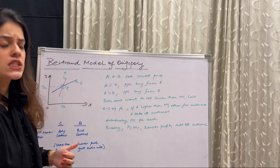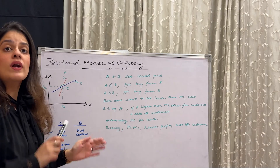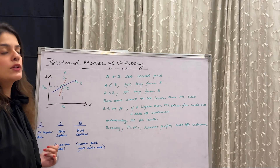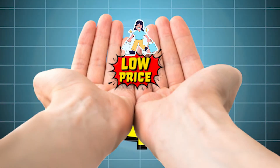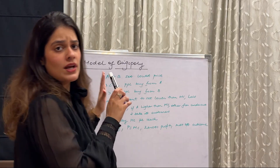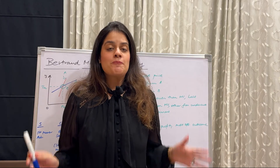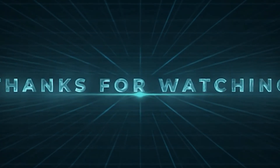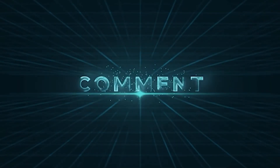To quickly summarize the differences between the three models: Stackelberg's model involves a first-mover advantage; Cournot's model is based on quantity competition; and Bertrand's model is based on price competition. In Cournot, both firms share the market, but in Bertrand's model, the firm with the lower price can take the entire market. That covers all three models — I hope you're clear on all of them. Thank you so much for watching, and I'll see you in the next video.